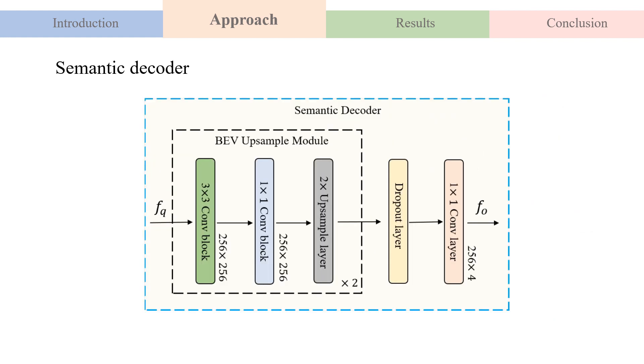In the semantic decoder, we reshape the BEV query features from the transformer decoder into a 2D spatial feature. The 2D spatial feature is then fed to a two-stage BEV upsample module, a dropout layer, and a convolution layer to compute the final BEV segmentation result.